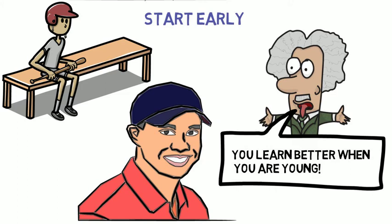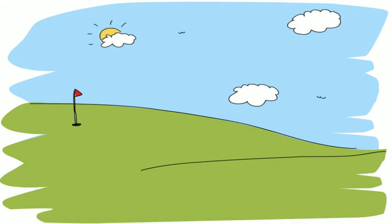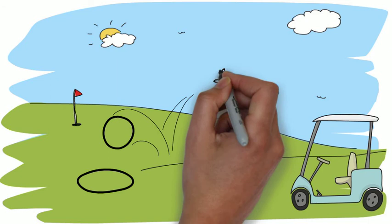By the age of 3, he already shot 48 over 9 holes at the Navy course. By the time he turned 20, Tiger Woods has already won 3 consecutive U.S. Amateur titles and the NCAA Individual Golf Championship.